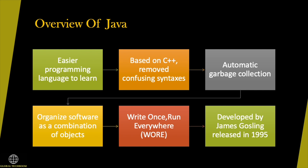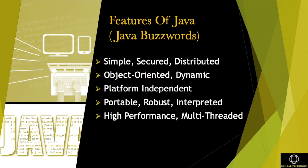James Gosling initiated the Java language project in 1991 along with a small team of engineers and released it in 1995. Java programming language is very simple and easy to learn, understand, and code. It supports all the features of object-oriented programming.